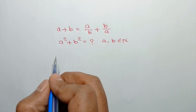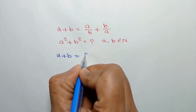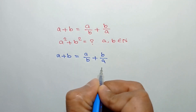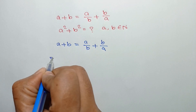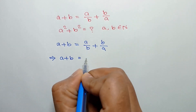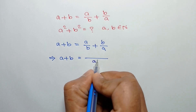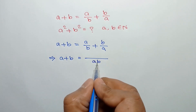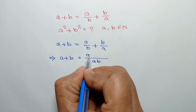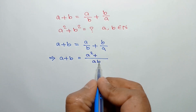From the given expression we can write a plus b is equal to a over b plus b over a. The LCM of b and a is ab, so a over b plus b over a equals a squared over ab plus b squared over ab.